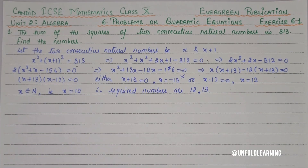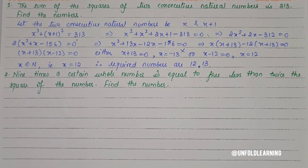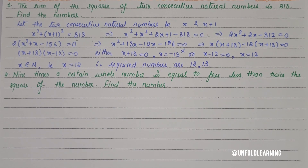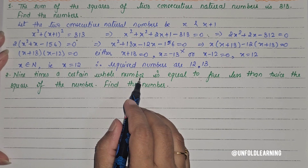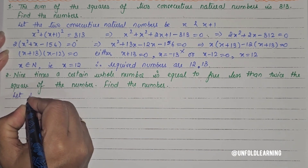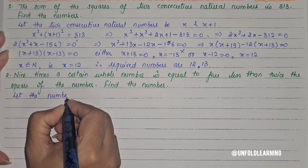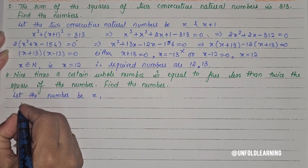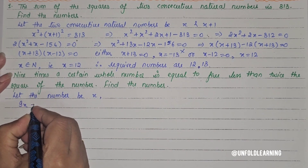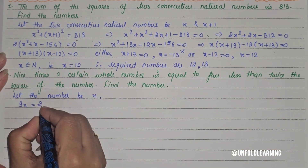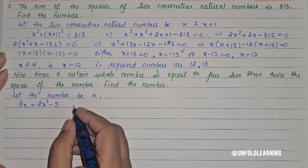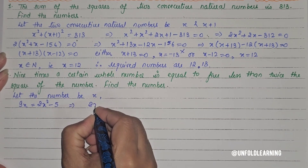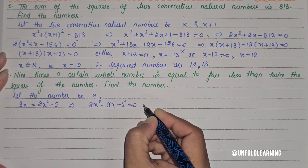Question number 2: 9 times a certain whole number is equal to 5 less than twice the square of the number. Find the number. So 9x = 2x² − 5, which gives us the quadratic equation 2x² − 9x − 5 = 0.